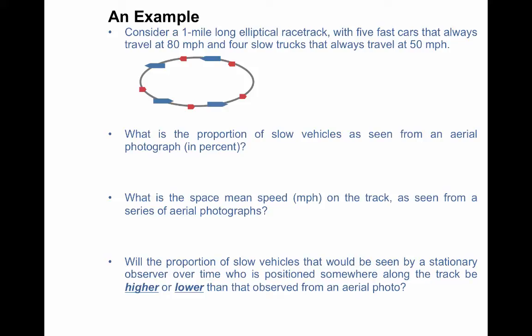In order to simplify our scenario, let's consider a one-mile-long elliptical racetrack, which is basically a one-mile-long straight road that's just been looped around and connected at the end, so essentially we end up with a closed system.